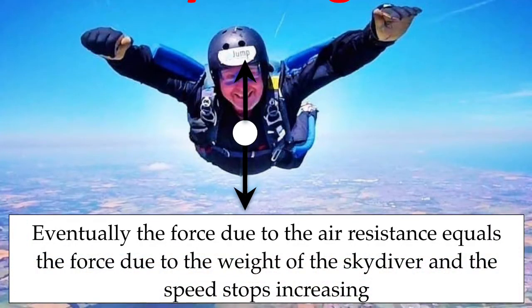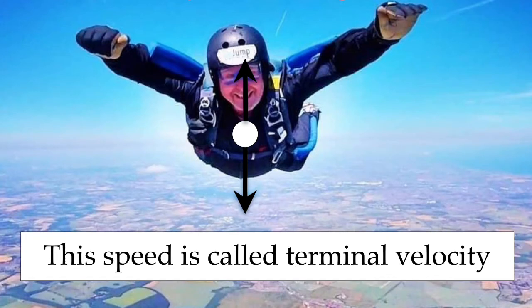Eventually, the force due to air resistance equals the force due to the weight of the skydiver, and the speed stops increasing. This is known as terminal velocity. At terminal velocity, the forces on the object are balanced, and the overall velocity of the object remains constant.